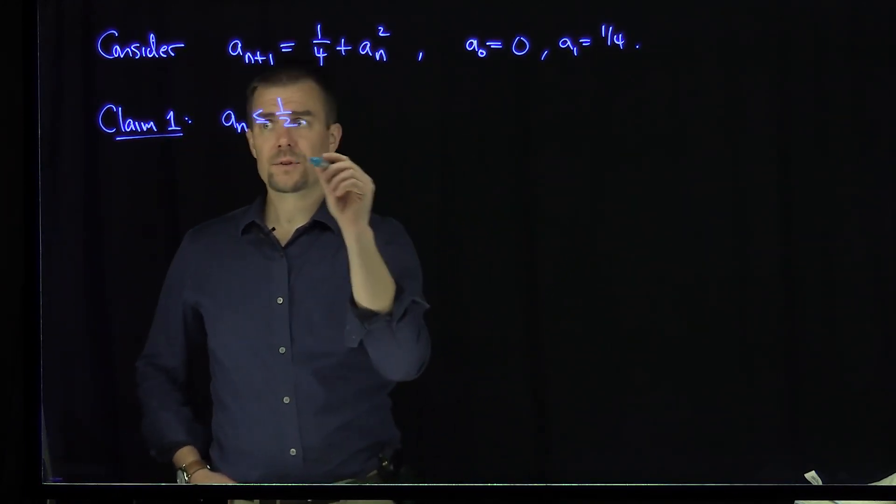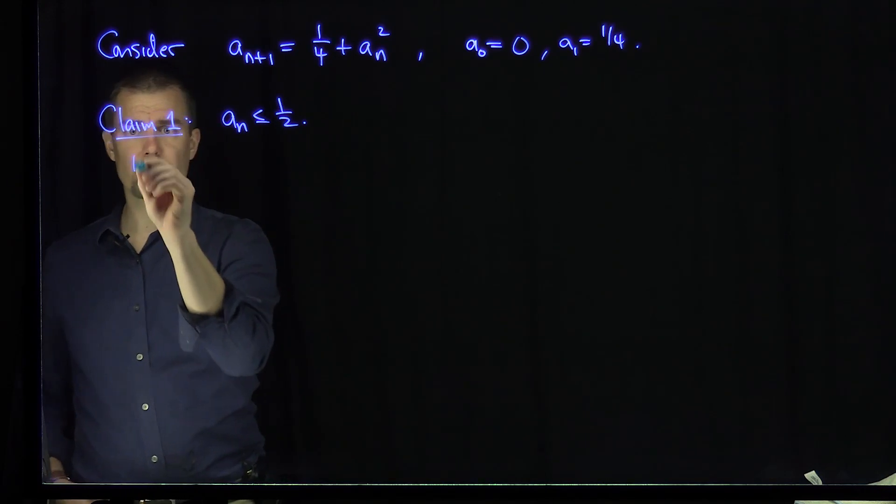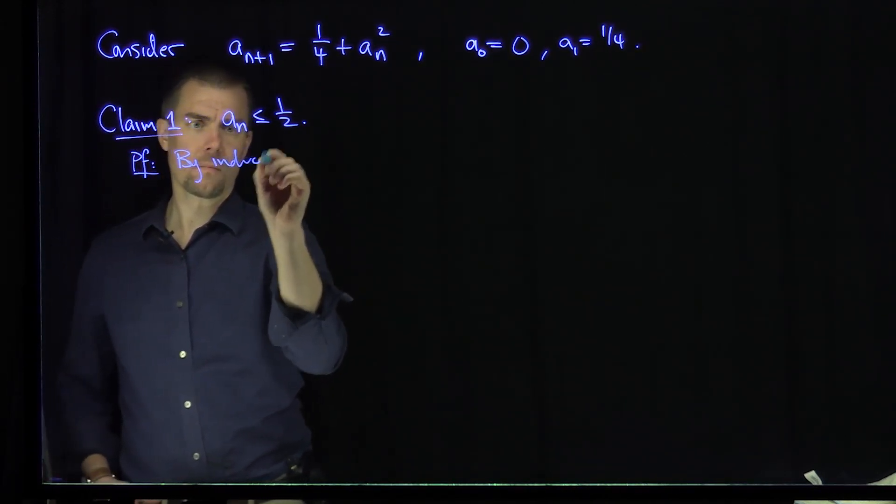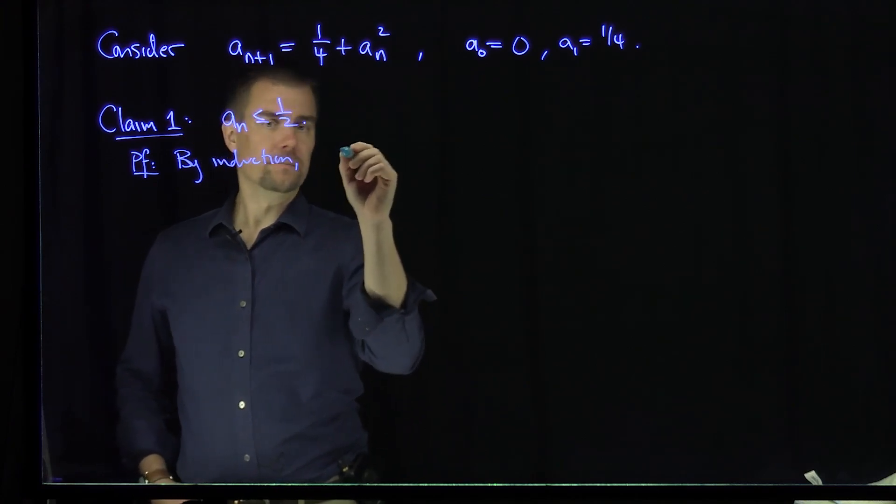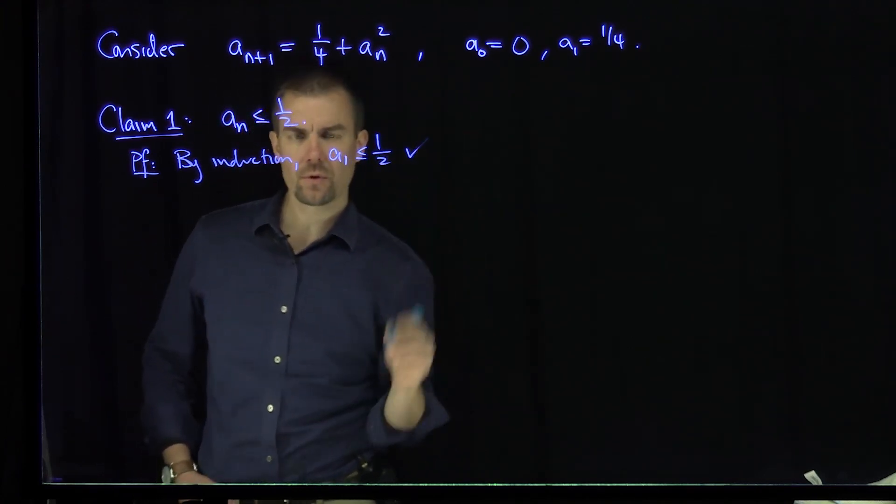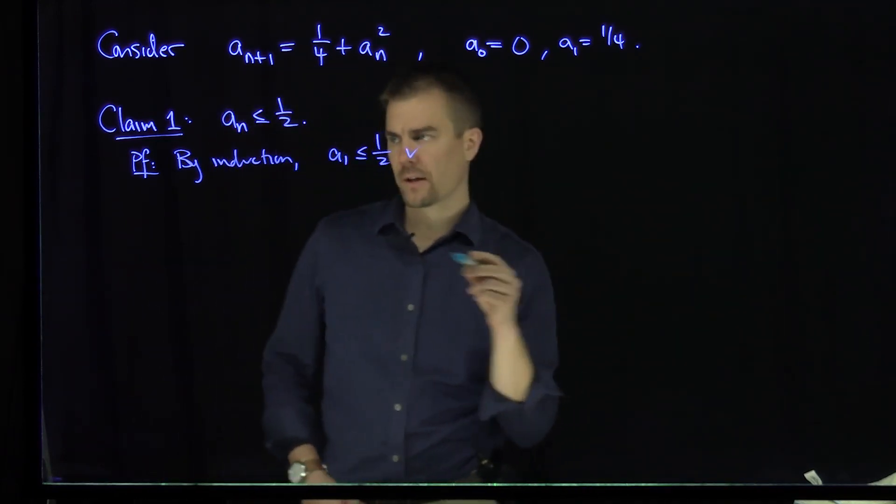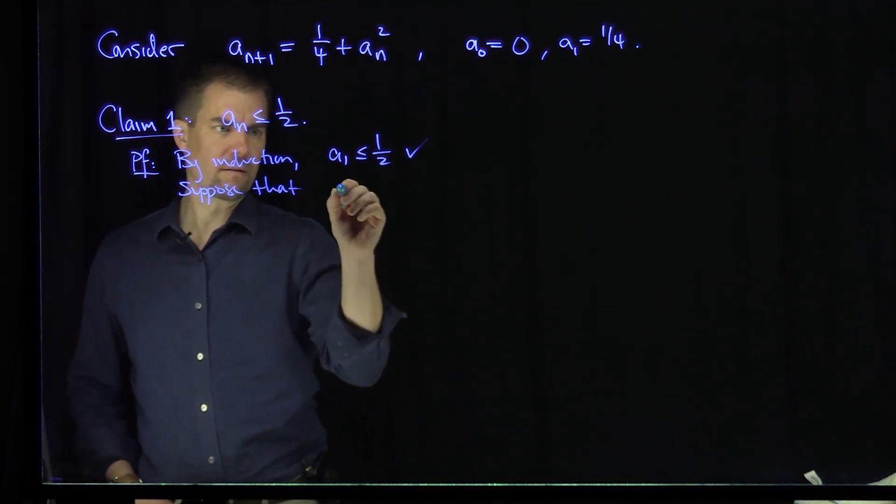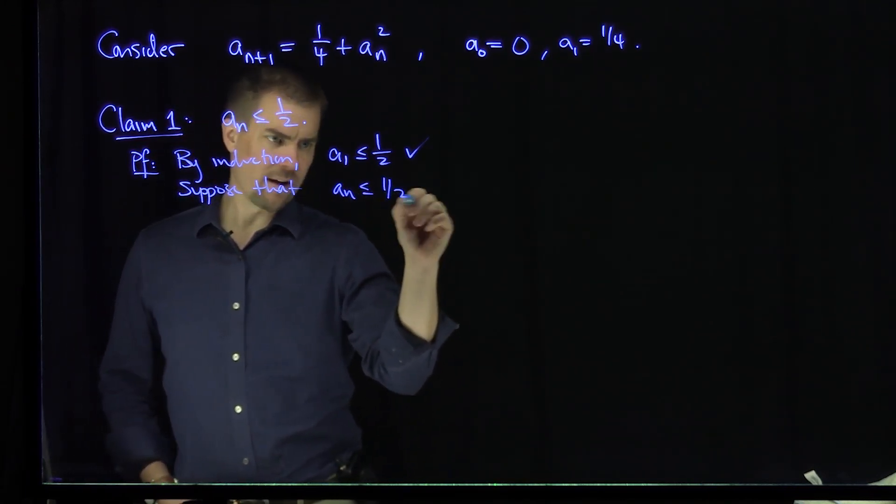So it's clearly true for a_1. So the statement is true. We'll do this by induction. So the proof is by induction. a_1 is less than or equal to one half. So that statement is true. And then secondarily, let's suppose that a_n is less than or equal to one half.